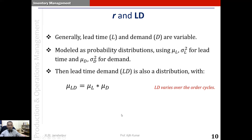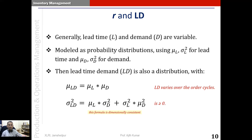The lead time demand varies across the order cycles. The variance of lead time demand, sigma squared_LD, equals mu_L times sigma squared_D plus sigma squared_L times mu squared_D. Even though the square is missing on the mu_L term in the notation shown, this formula is derived systematically and is dimensionally consistent.